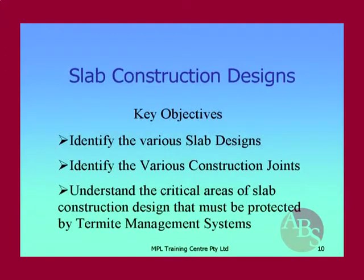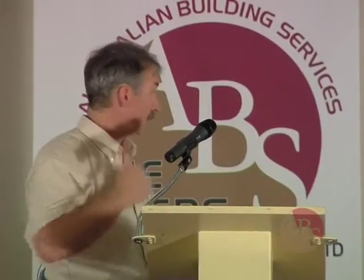One of the worst termite problems I've seen in 22 years in the industry has been associated with infill slabs. Infill slabs are possibly the worst things invented when it comes to termite entry — there are just so many little places where termites can get through. The concrete only has to be a little bit irregular, only a couple of millimetres, and termites can find their way through. The worst cases have been where there's been no inner leaf wall and the concrete slab on the inside has been laid directly on top of the foundation. We need to identify the various slab designs, construction joints, and understand the critical areas of slab construction and how they're protected by termite management systems.